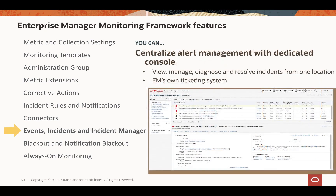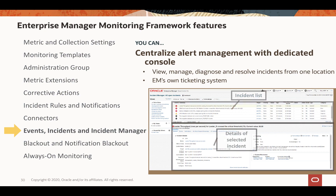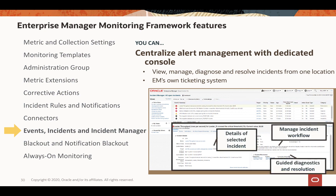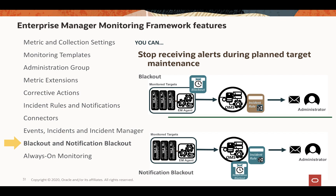EM has its own ticketing system called incident manager, where you can centralize alert management with a dedicated console — view, manage, and diagnose incidents in one location, with filtering capability and incident details. When you have planned target maintenance, you can use blackout to stop receiving alerts during the planned maintenance time. There are two types: traditional blackout and notification blackout. Both stop sending alerts, but their underlying mechanisms differ slightly.